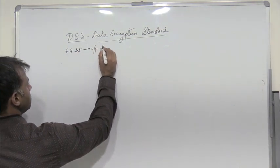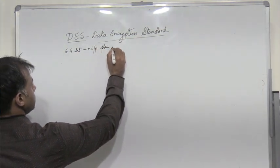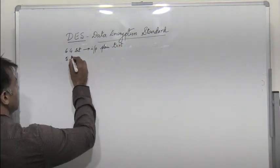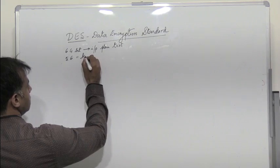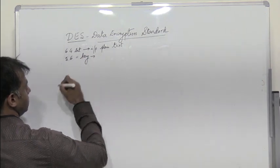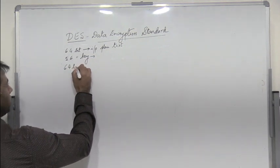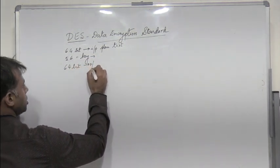The input is plaintext. It uses a 56-bit key and then produces a 64-bit output, which is the ciphertext.